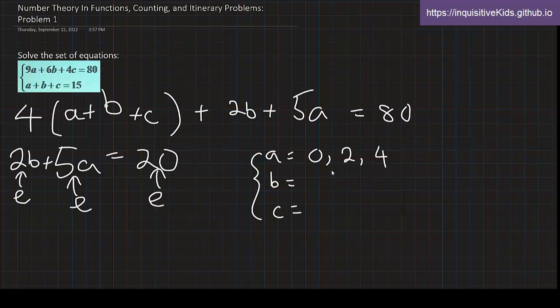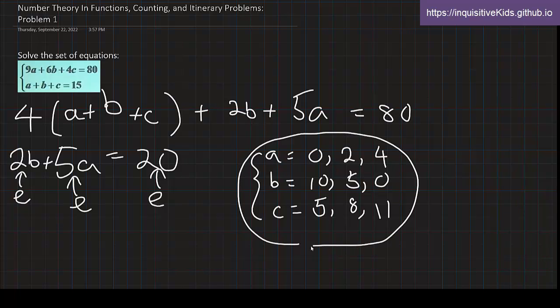Okay, so if a is equal to 0, then b would be equal to 10, causing c to be equal to 5. If a was equal to 2, the other two variables would be equal to 5 and then 8. And if a is equal to 4, we will have 0 and 11. And obviously we cannot keep going, because b cannot be a negative number. So this is our final solution to this system of equations.